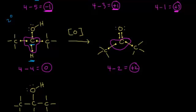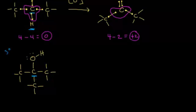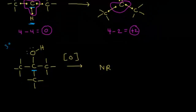Let's look at a tertiary alcohol. When I find the alpha carbon, I see that this time there are no hydrogens bonded to it. According to the mechanism, there's no way we can oxidize this tertiary alcohol under normal conditions. So if we attempted to oxidize it, there would be no reaction, since we are missing that alpha hydrogen. Let's take a look at the mechanism and see why we need that alpha hydrogen on the alpha carbon.